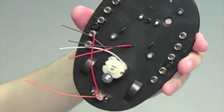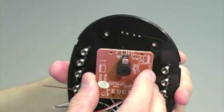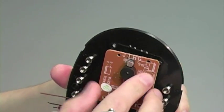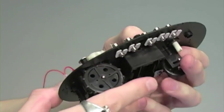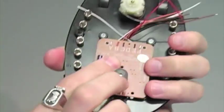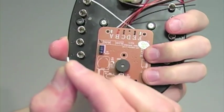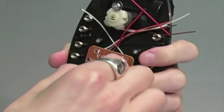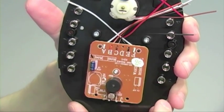For the next step, let's go ahead and get our board attached, taking care not to get any of the wires caught. And once we have it in place, we can attach using one of the small screws. Step three complete.